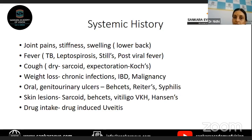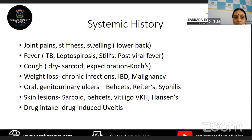Systemic history is important to identify the systemic associations of uveitis, because you have to treat the patient as a whole and not just the eye, and your treatment might also alter with the type of disease. The most important systemic history is joint pain. Along with pain, you should always ask for stiffness and swelling in the joints, because joint pain might just be a non-specific symptom of osteoarthritis, whereas presence of stiffness and swelling will give further clues to whether there is an inflammatory arthritic picture.